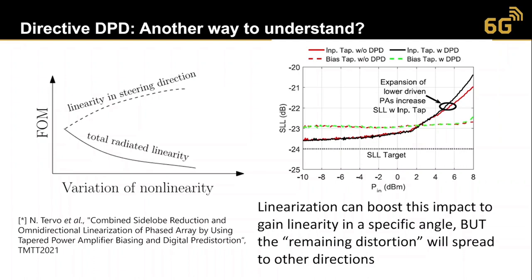We can understand this trade-off by looking at beam indicators such as sidelobe level of the signal across varying envelope levels — the different instantaneous power levels present in communication signals. Different signal values experience different sidelobe levels, so higher-amplitude signals may have higher sidelobes than lower ones, meaning the beam pattern varies as a function of the signal envelope.